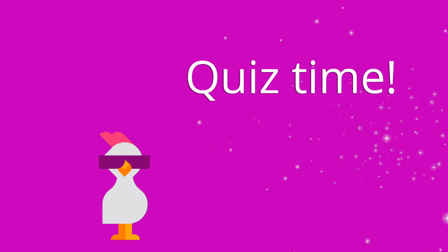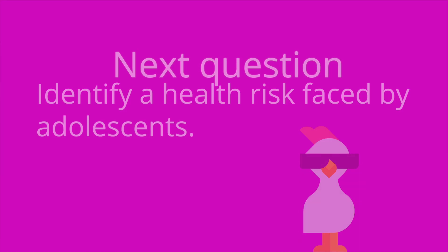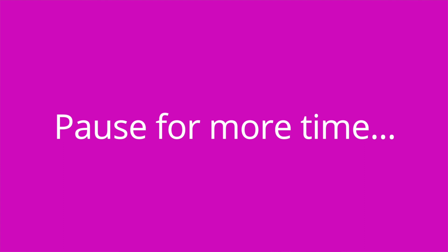That wraps up the content for this video. Let me ask a couple of questions to check your knowledge. First: list at least three key family teaching tips related to health risks faced by children. Family teaching for children includes car seat safety, protective equipment for sports, healthy eating, physical activity or exercise, and staying up to date on immunizations. Next: identify a health risk specific to adolescents. Adolescent health risks include mental health disorders, substance use, smoking, motor vehicle accidents, and STIs.